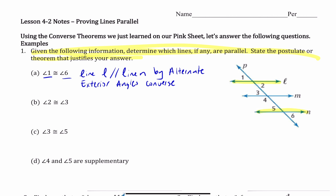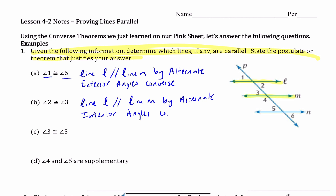Let's look at 1B. Angle 2 is congruent to angle 3 — here's 2 and here's 3, and we can assume they are congruent. Line L helps create angle 2 and line M helps create angle 3. These angles are on the inside of the lines and on the opposite side of the transversal. So, line L is parallel to line M by the Alternate Interior Angles Converse.